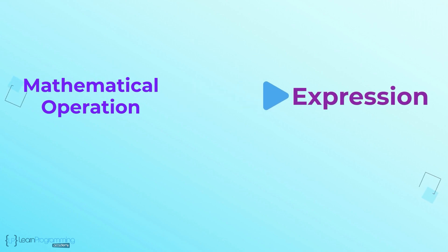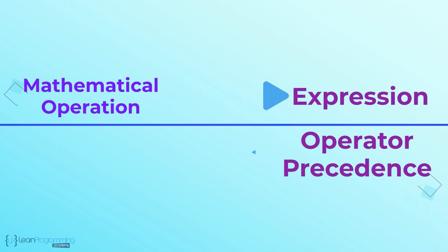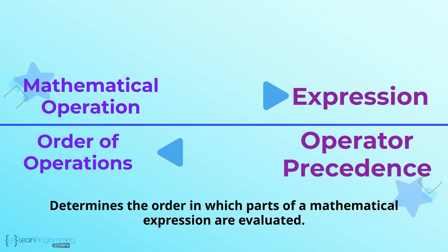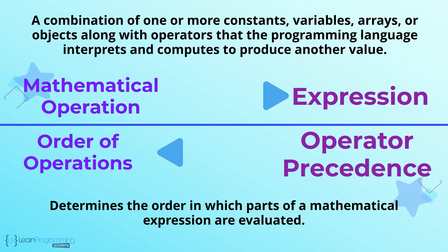The mathematical operation is the expression, and operator precedence or order of operations determines the order in which parts of a mathematical expression are evaluated. A definition of expression in a programming language is a combination of one or more constants, variables, arrays, or objects, along with operators that the programming language interprets and computes to produce another value.